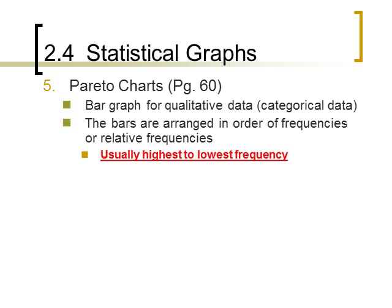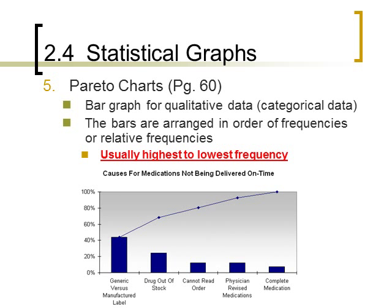A Pareto chart is a bar graph that is used to graph qualitative data. So this is something that has a funny name, but we've all seen it before. You'll see below that we have graphed data that corresponds to categories like generic versus manufactured label is the first bar, drug out of stock is the second, cannot read the order is the third. So you have categories listed for each bar. Notice the bars are not connected to each other. Also, the bars in a Pareto chart go in order from high to low. So that's one thing that you always have to do: you have to go in that order. The highest amount comes first.